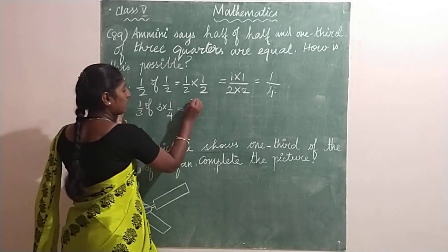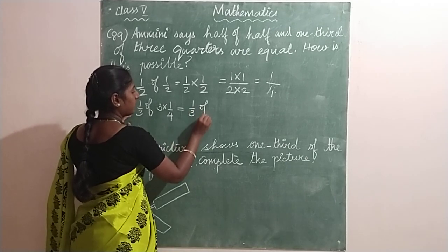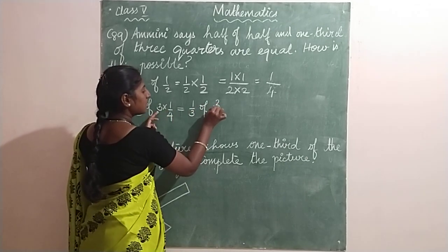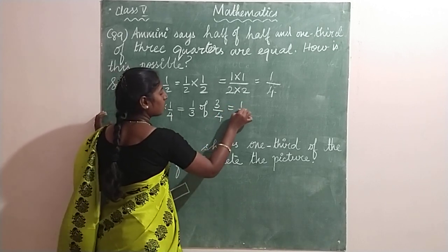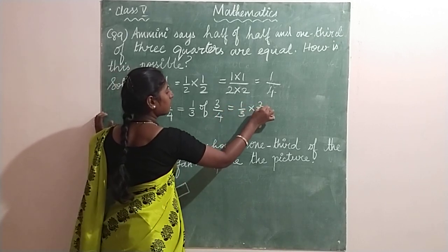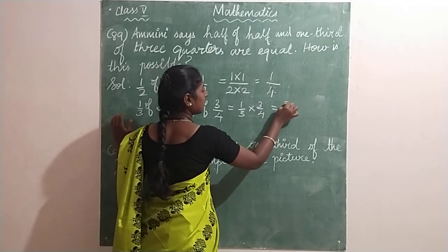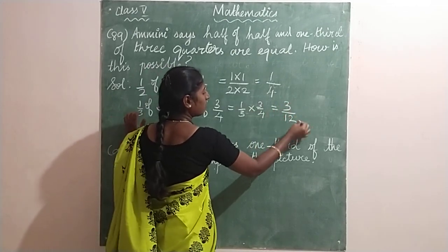Now let us find what is this. Let this one by three of be as it is. And three into one by four is same as three by four. Three ones are three divided by four. And this can be written as one by three into three by four. And this can be written as one three is three, three fours are twelve.